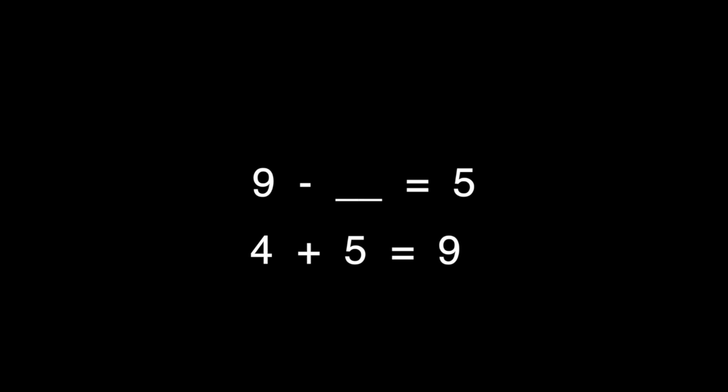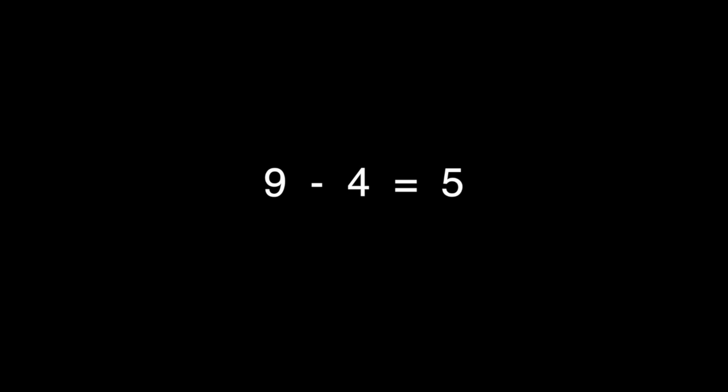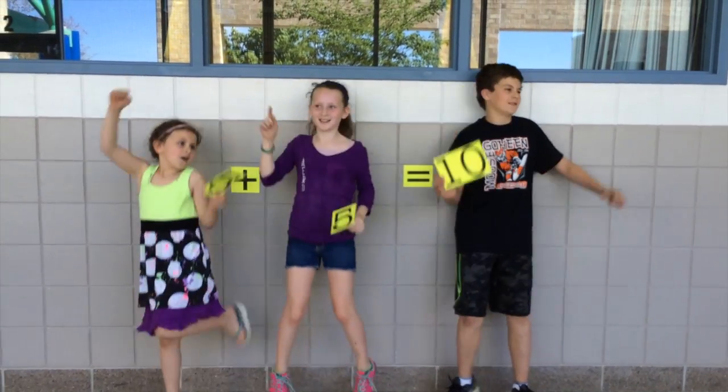Now you try: nine minus blank equals five. Press pause to think this over. You know that nine is the whole because it starts the subtraction sentence. You also know that five is one of the parts. If you add four to five you get nine, so the missing part is four. Now create fact families of your own — it's a lot of fun if you ask your family to join you.